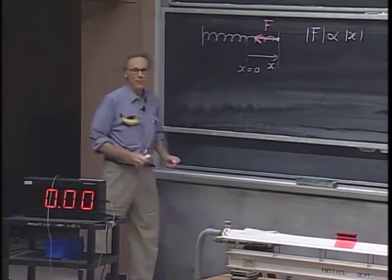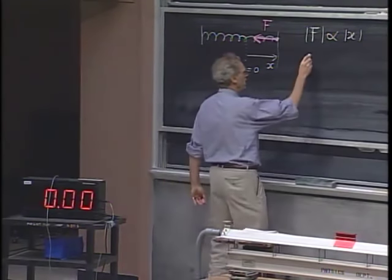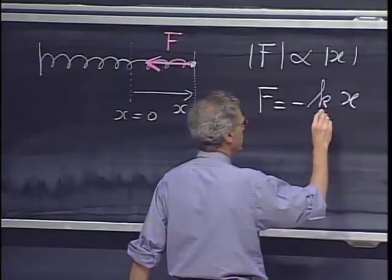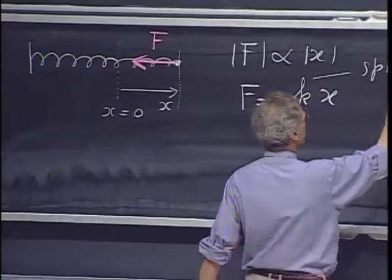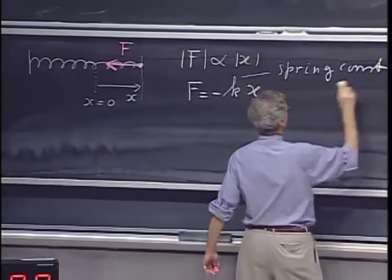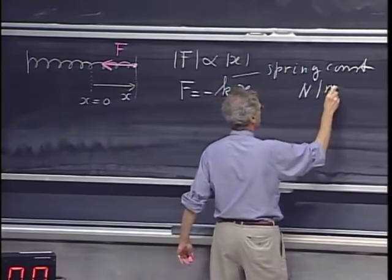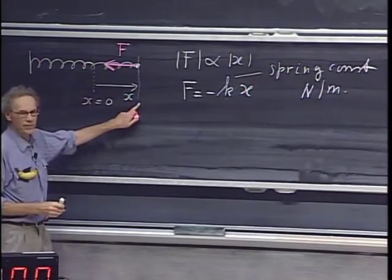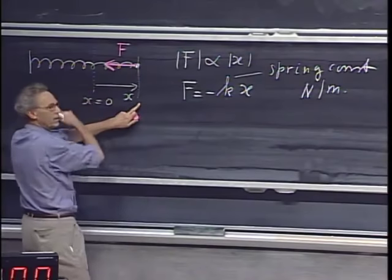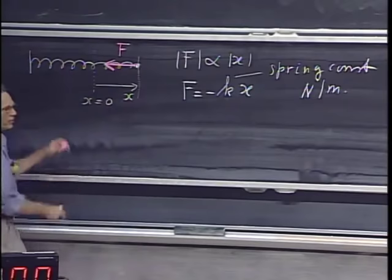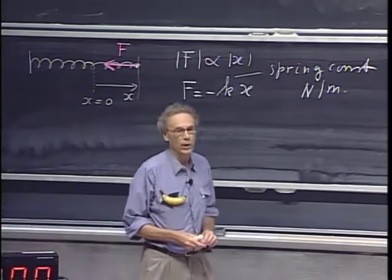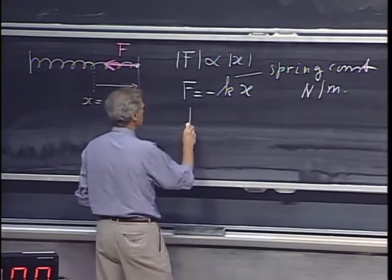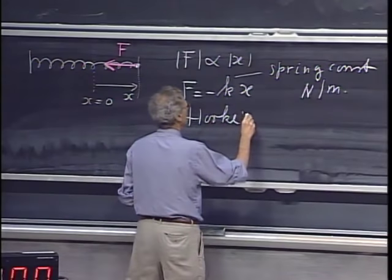This is a one-dimensional problem, so to avoid vector notation, we can simply say that the force is minus a certain constant — which we call the spring constant — times x. The spring constant has units of newtons per meter. The minus sign takes care of the direction: when x is positive, the force is in the negative direction; when x is negative, the force is in the positive direction. It is a restoring force. Whenever this linear relation between F and x holds, that is referred to as Hooke's Law.